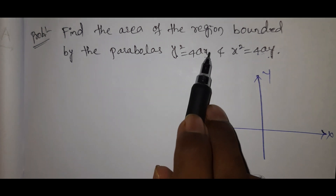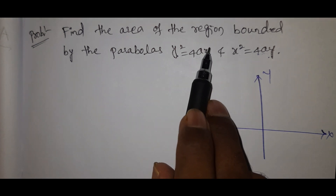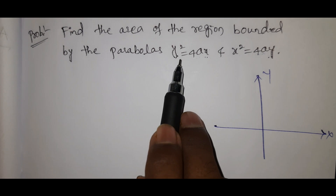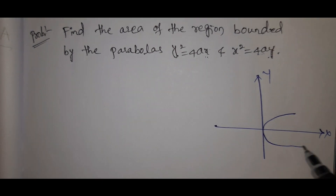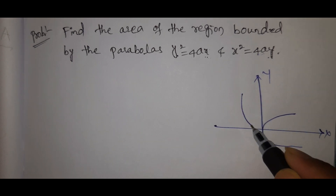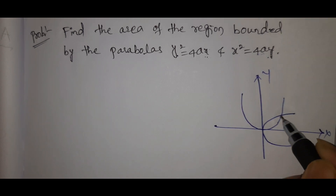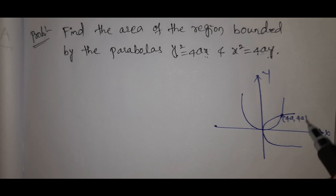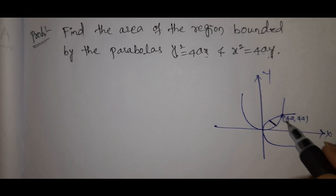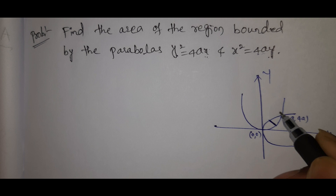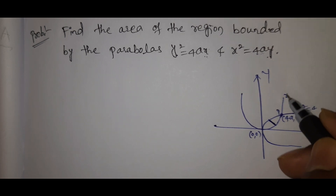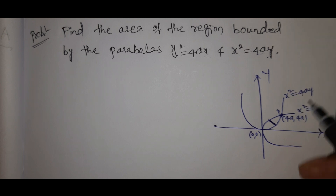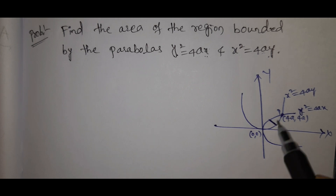The curve y²=4ax opens along the x-axis, and x²=4ay opens along the y-axis. Drawing both: the x-axis and y-axis are marked. The two parabolas intersect at the point (4a, 4a), with the strip between them shown. This is the origin point O and point P.